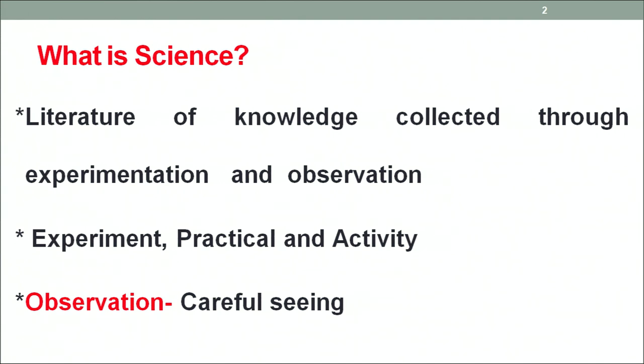Another question arises: what is experimentation and what is observation? Doing things can be categorized into three major domains: experiment, practical, and activity. Experiments are conducted when a person moves from a known to an unknown state. For example, to determine the cation and anion present in a salt, or to determine the strength of a given molar salt solution — these are experiments because the experimenter is in a known state but has to move to an unknown state.